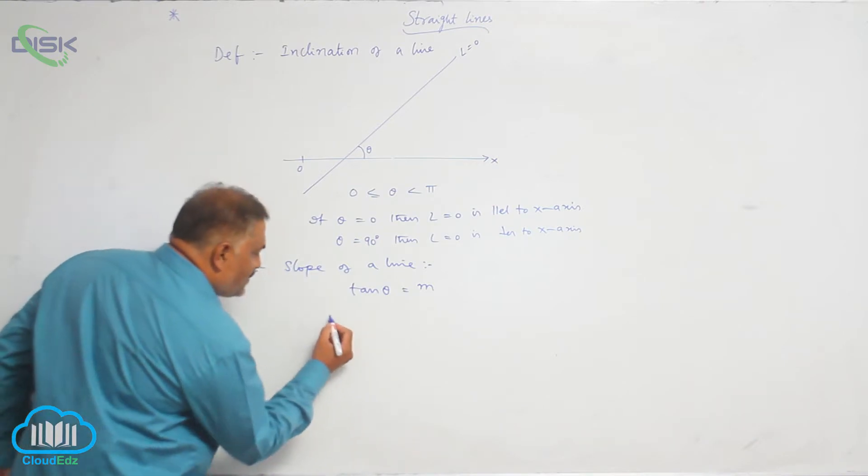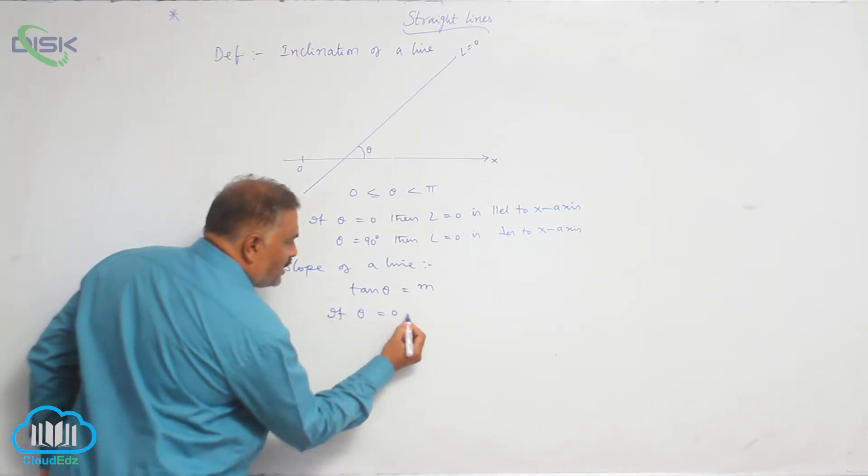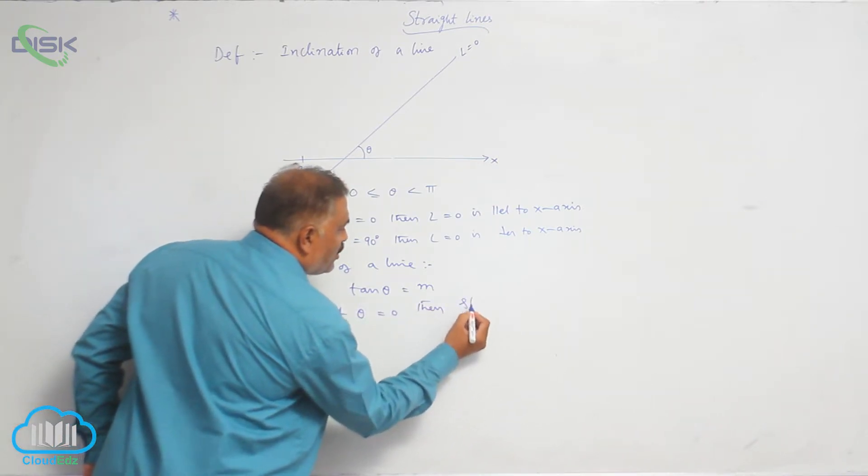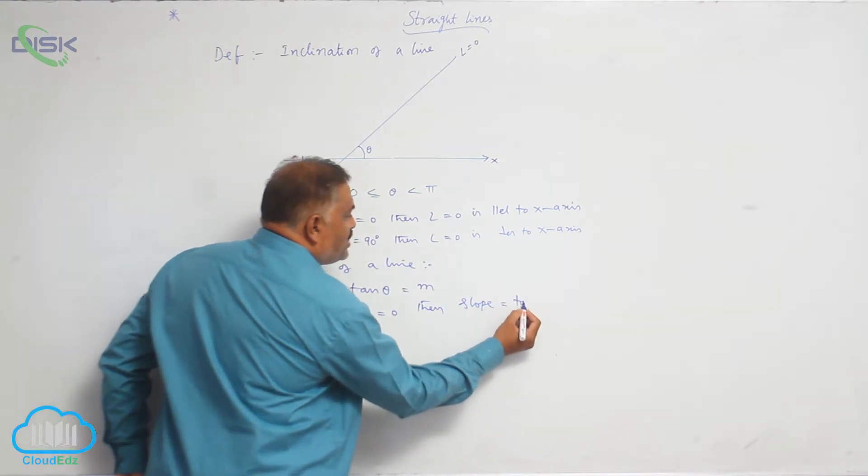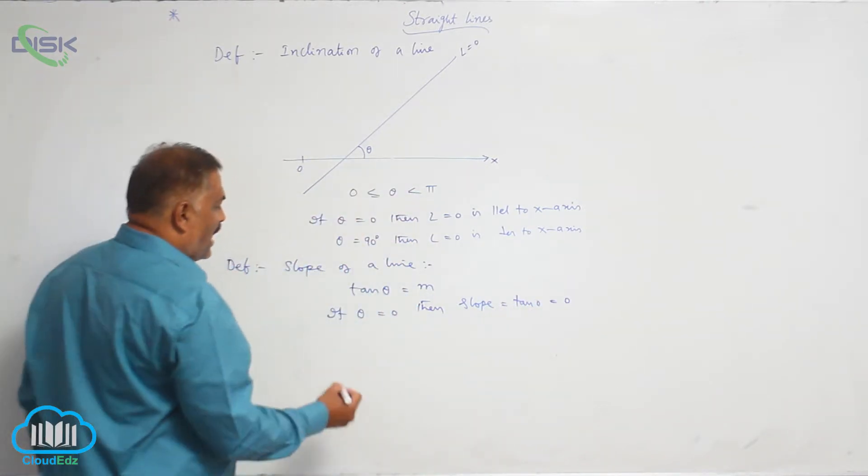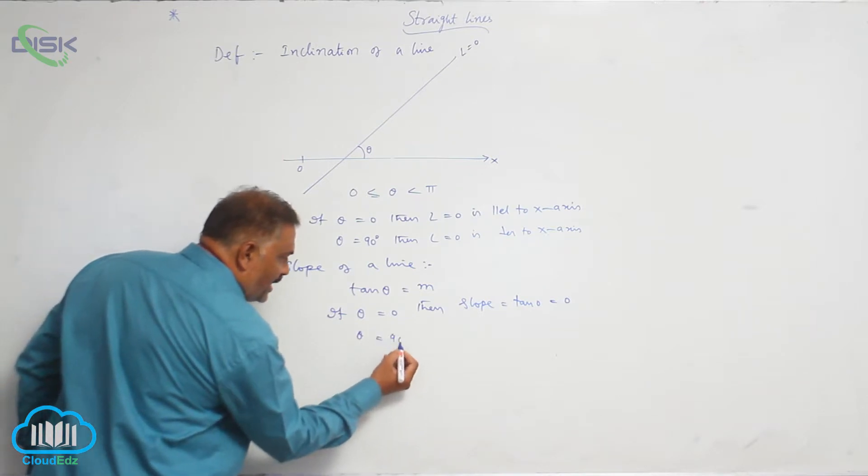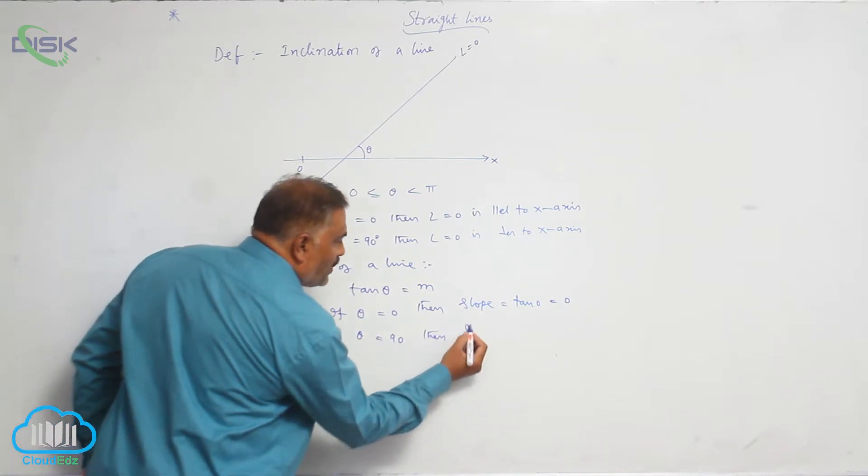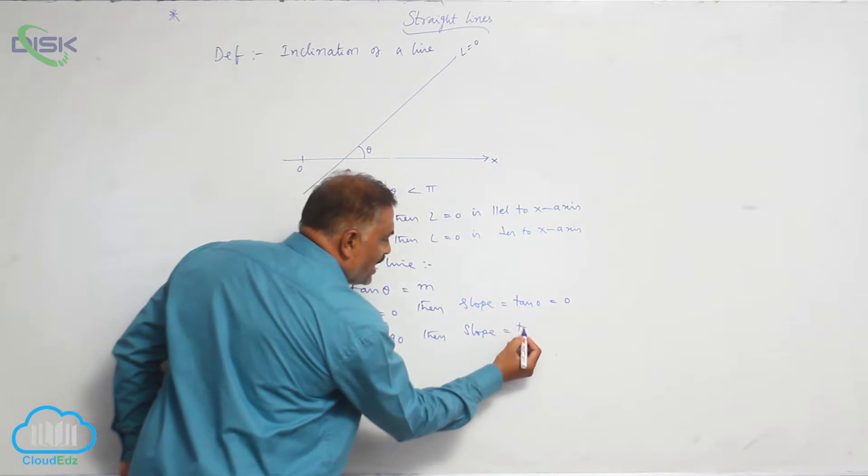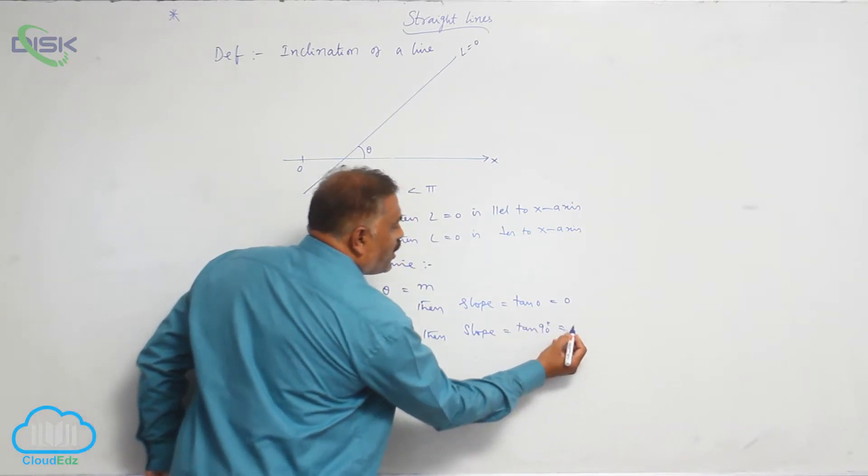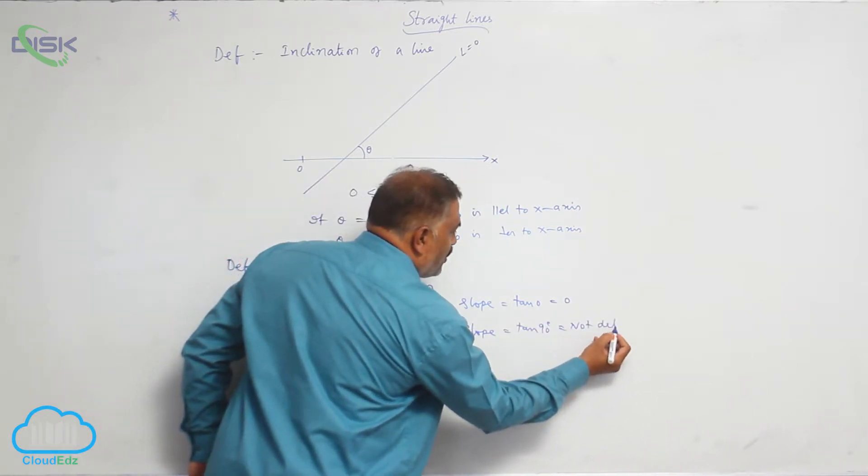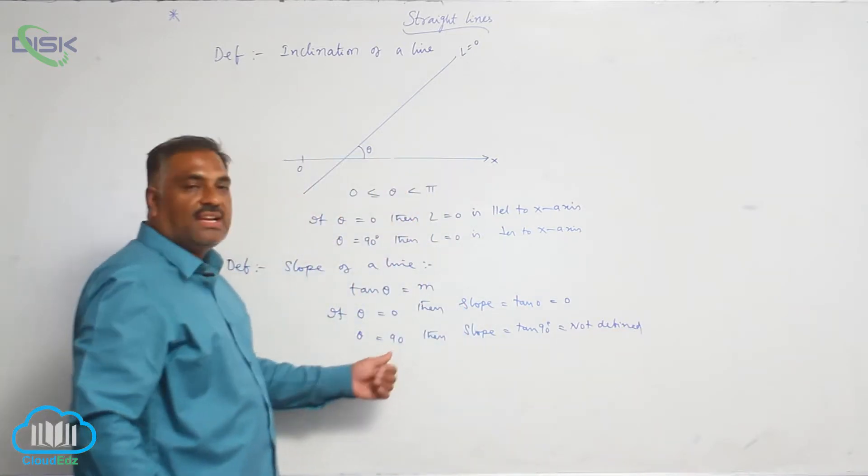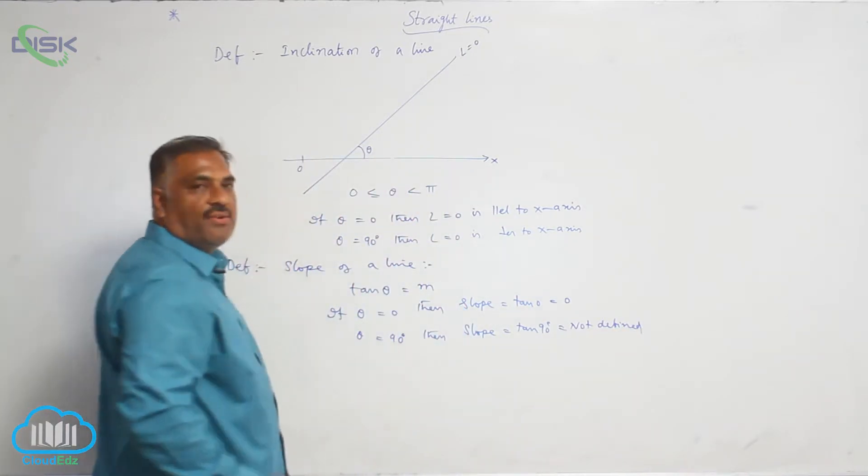Now if theta is equal to 0, then slope is equal to tan 0, that is equal to 0. And theta equal to 90, then slope is tan 90. This is not defined. So for this case we say that for a vertical line, the slope is not defined.